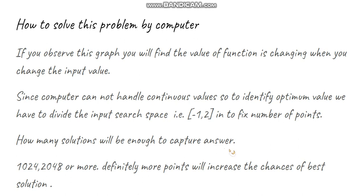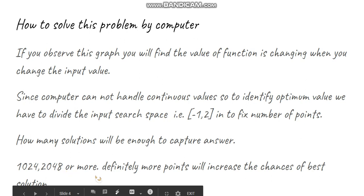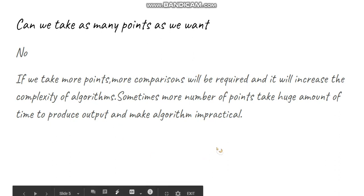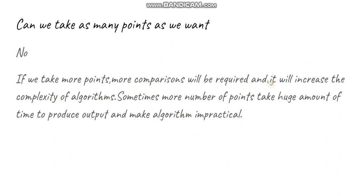But how many solutions will be enough to capture the global optimal solution — 1024, 2048, or more? If we increase the number of points, the chances of capturing the best solution will be very high. But if we take many points like 2^40 or 2^100, we need 2^100 evaluations to identify those points, 2^100 calculations to compute their fitness, and roughly 2^100 comparisons to compare the solutions — totaling almost 2^200 operations. This makes the algorithm impractical.